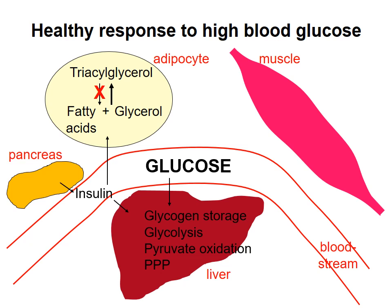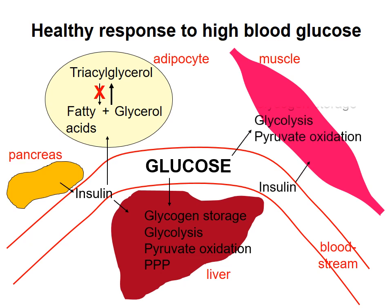In muscle cells, glycogen storage and glucose oxidation are also stimulated. Consumption of glucose in these pathways acts to decrease the level of glucose in the bloodstream. This is the healthy response to elevated blood glucose.